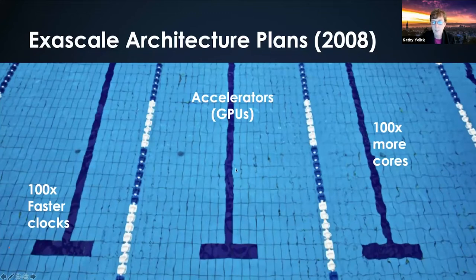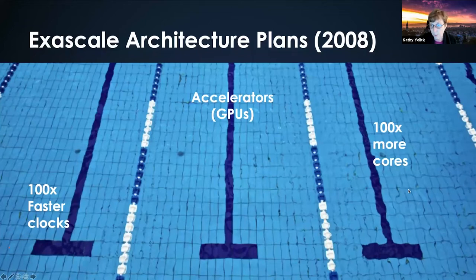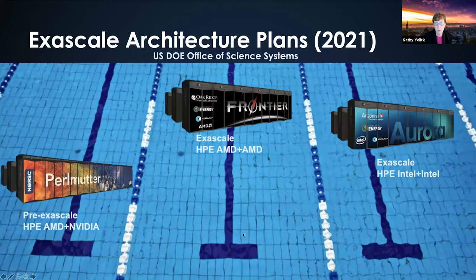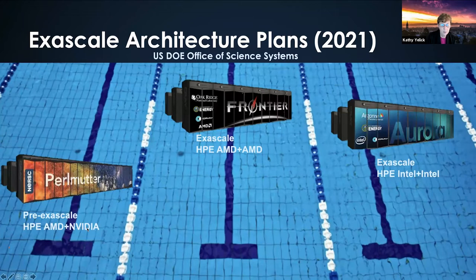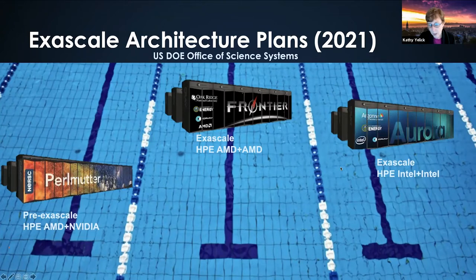There were already GPUs being used in some supercomputers, and another option was to have more cores — smaller, simpler cores with a lower clock rate, and to get more of them. Looking at today's results from that 2008 planning: we have three systems at the three open science DOE labs — the Perlmutter system at NERSC (pre-exascale, with NVIDIA GPUs and AMD CPUs), the Frontier system being installed at Oak Ridge National Lab (AMD CPUs and AMD GPUs), and the Aurora system going into Argonne National Lab (Intel CPUs and Intel GPUs). So the architectural diversity we had planned on back in 2008 came to nothing — we ended up with diversity across the vendor space but with the same network from HPE/Cray.